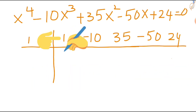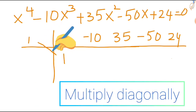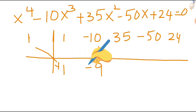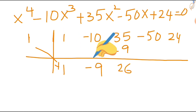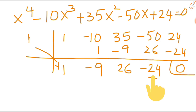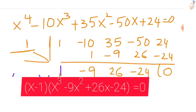Copy down the number as it is. Then multiply diagonally. 1 times 1 is 1, write here. Minus 10 plus 1 is minus 9. Then again multiply diagonally: 1 times minus 9 is minus 9, then 35 minus 9 is 26. Then 1 times 26 is 26, minus 50 plus 26 is minus 24. Then 1 times minus 24 is minus 24, which gives 0. So this is your constant value, this is your x coefficient, this is x squared, and this is x cubed.